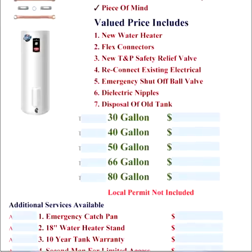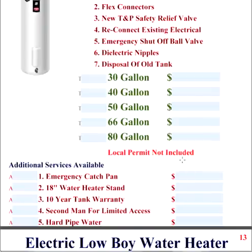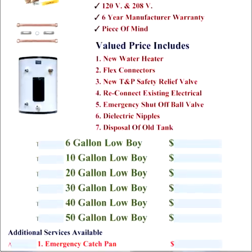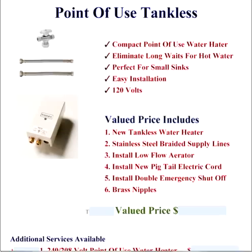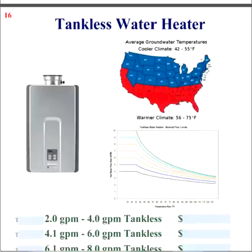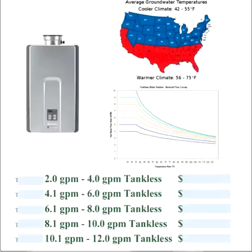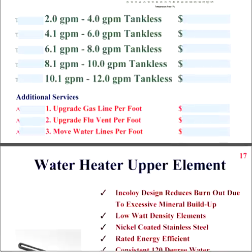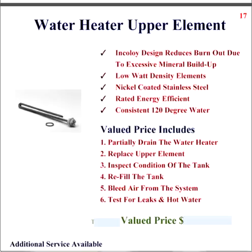We do 30 to 80 gallon on the electric. You'll see we put in bright red letters that the local permit is not included — some cities require it across the country, and actually some don't require a permit. You can include the permit price on your proposal. Low boys go from 6 to 50 gallon. Our tankless section — we rate these in every 2 gallons per minute. And then there is a price per foot to upgrade gas, flue, and water lines. Our pricing guide gives you the allotted time per foot as well as the cost of material. It's a suggested price, and you can customize it to fit whatever your business model is today.